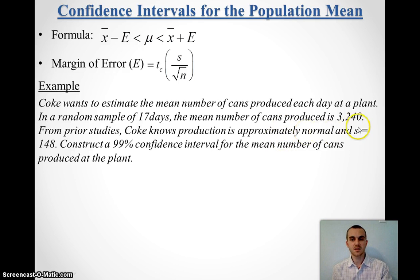They know that it's an approximately normal production, and they only have the sample standard deviation, which is 148. And they want the 99% confidence interval for the mean number of cans being produced.